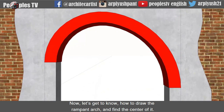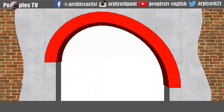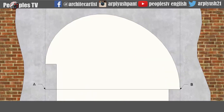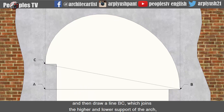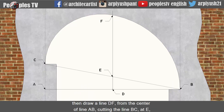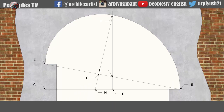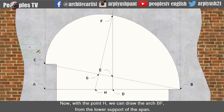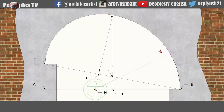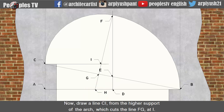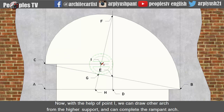Now let's get to know how to draw the rampant arch and find the center of it. First, draw a line AB from the lower support and then draw a line BC joining the higher and lower support of the arch. Then draw a line DF from the center of line AB cutting line BC at E. Then draw a line FG perpendicular to line BC. After that, extend line FG to point H on line AB. With point H, we can draw the arch BF from the lower support. Then draw a line CI from the higher support of the arch cutting line FG at I. With the help of point I, we can draw another arch from the higher support and complete the rampant arch.